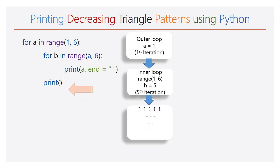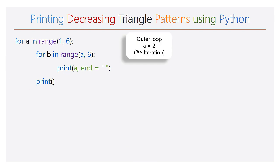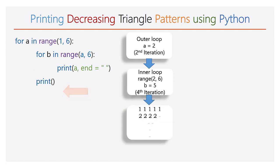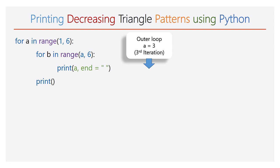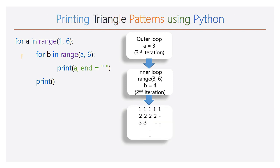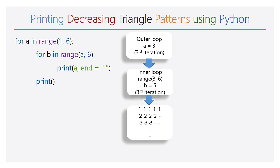After completing the inner for loop, the empty print function is executed and the cursor will take the new line. The execution will go to the first line. The value of a will be 2 and the range of b is 2 to 6. The inner for loop will iterate 4 times. During each iteration, the number 2 will be printed. Hence in the second line you are going to get four 2s. After completing the inner for loop, the print function is executed and the cursor will take the new line. The value of a is changed to 3. The range of b is 3 to 6. The inner for loop will iterate only 3 times. During each iteration, the number 3 will be printed. Hence you can observe there are three 3s in the third line.